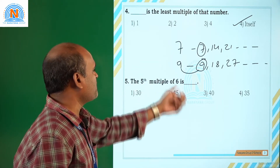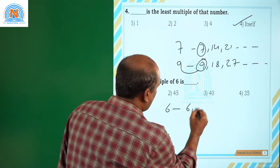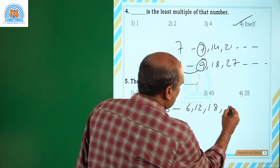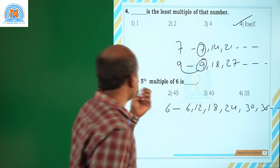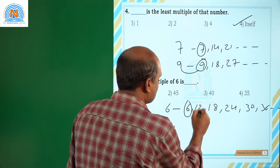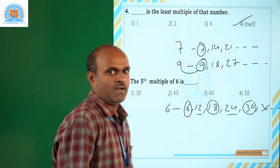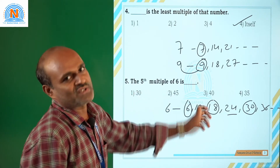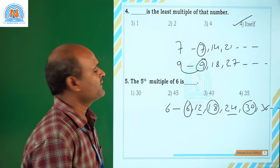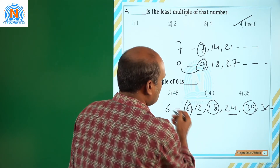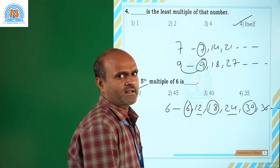Next, the fifth multiple of 6 is — what are the multiples of 6? 6, 12, 18, 24, 30, 36, and so on. He is asking for the fifth multiple. This is the first multiple, this is the second, third, fourth, fifth. What is the fifth multiple? 30. So 5 × 6 = 30. Suppose he asked for the seventh multiple, that would be 7 × 5. The correct answer is option 1, the fifth multiple is 30.